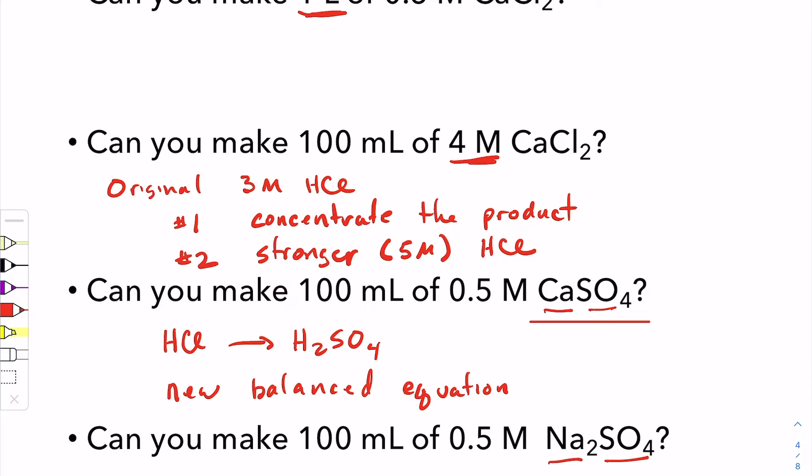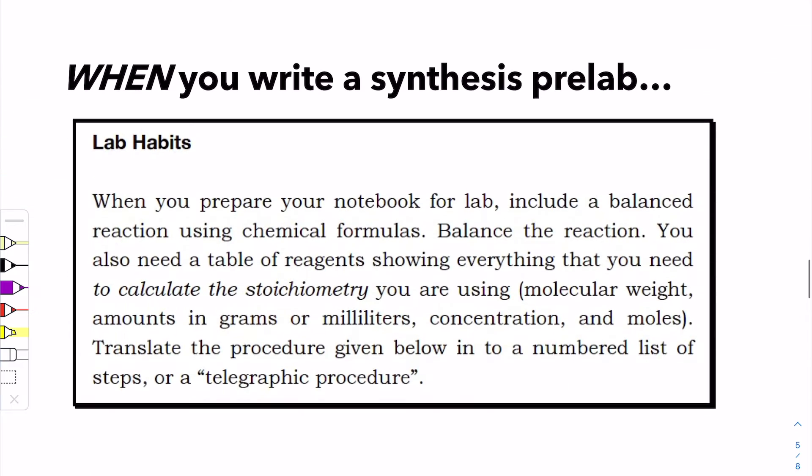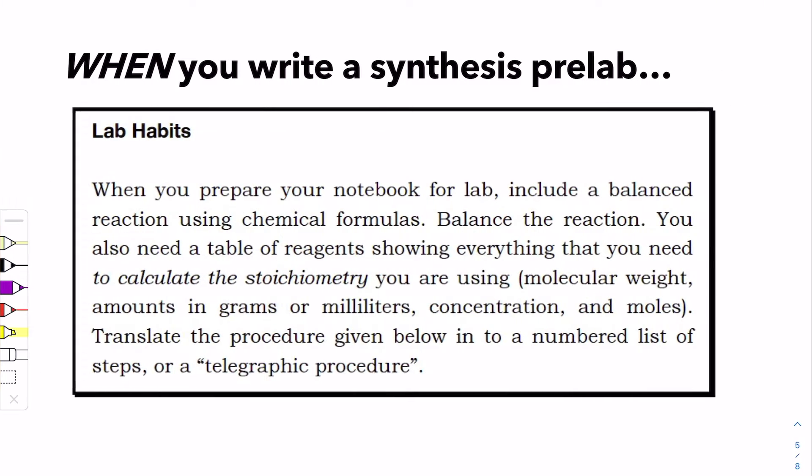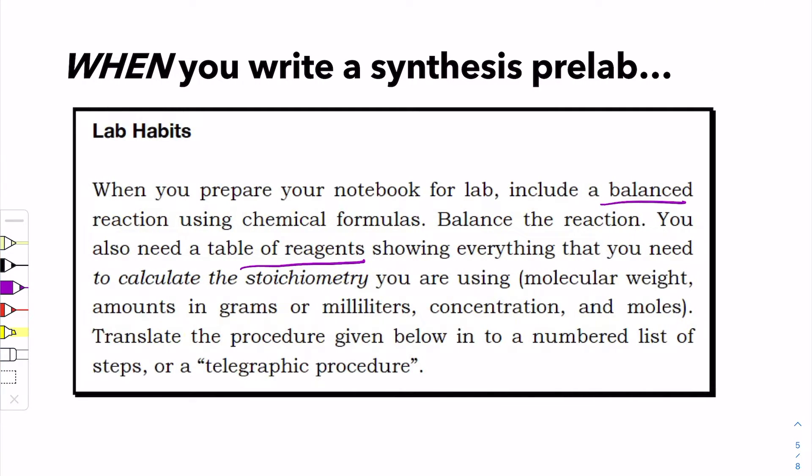So we could go on with more examples. For example, can we make sodium sulfate? This would require, instead of using calcium, to use sodium. You would have to adjust the amount you used, the number of grams, and also the moles because the equation balances differently. That is why in the introduction of this lab, when you read it, when you write a synthesis in your pre-lab, make a table of reagents and include a balanced reaction. These things aren't busy work. They explain the actual experiment that you're doing.